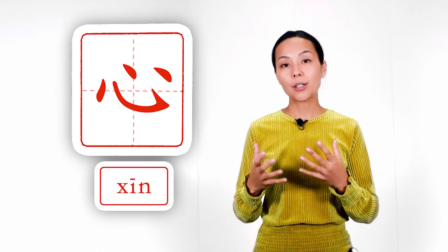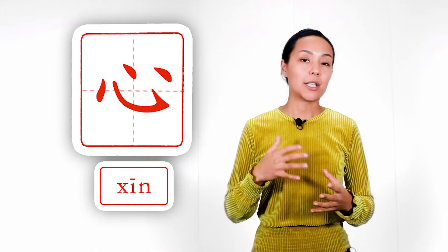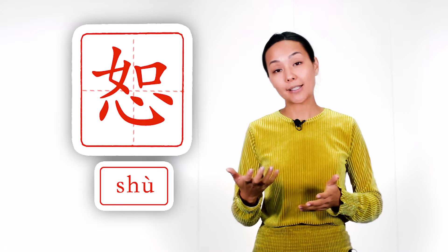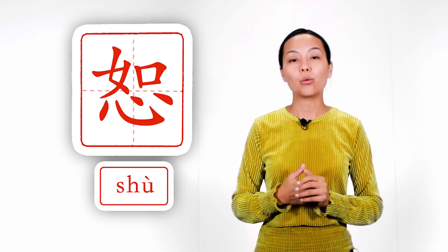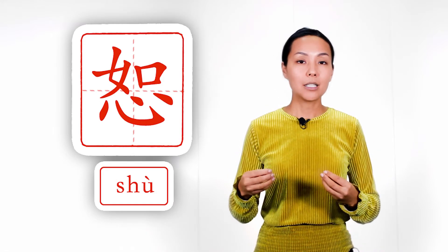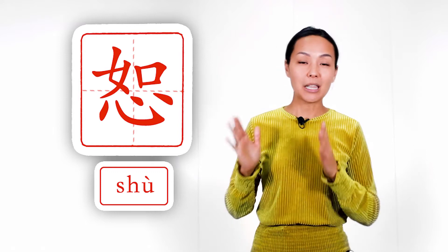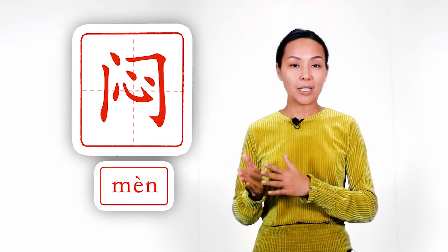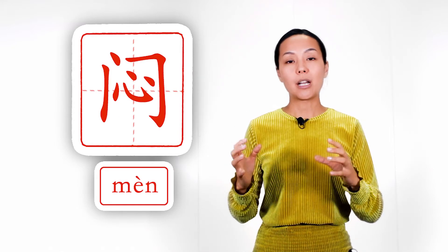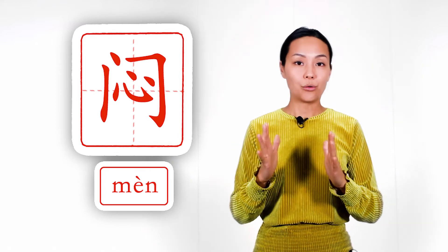And now let's look at characters where we see main form as part of characters. And our next example is a word to forgive. We see heart main form below. And our last example is a word gloomy, depressed, where we see heart main form inside of doors.